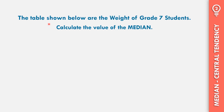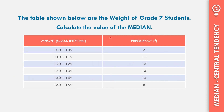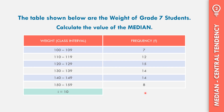In example number 2, the table shown below shows the weight of Grade 7 students. Calculate the value of the median. The weights and frequencies are: 100–109 kg: 7 students; 110–119: 12 students; 120–129: 15 students; 130–139: 14 students; 140–149: 14 students; 150–159: 8 students. The interval is equal to 10. Adding all frequencies: 7 plus 12 plus 15 plus 14 plus 14 plus 8, the total frequency N is equal to 70.